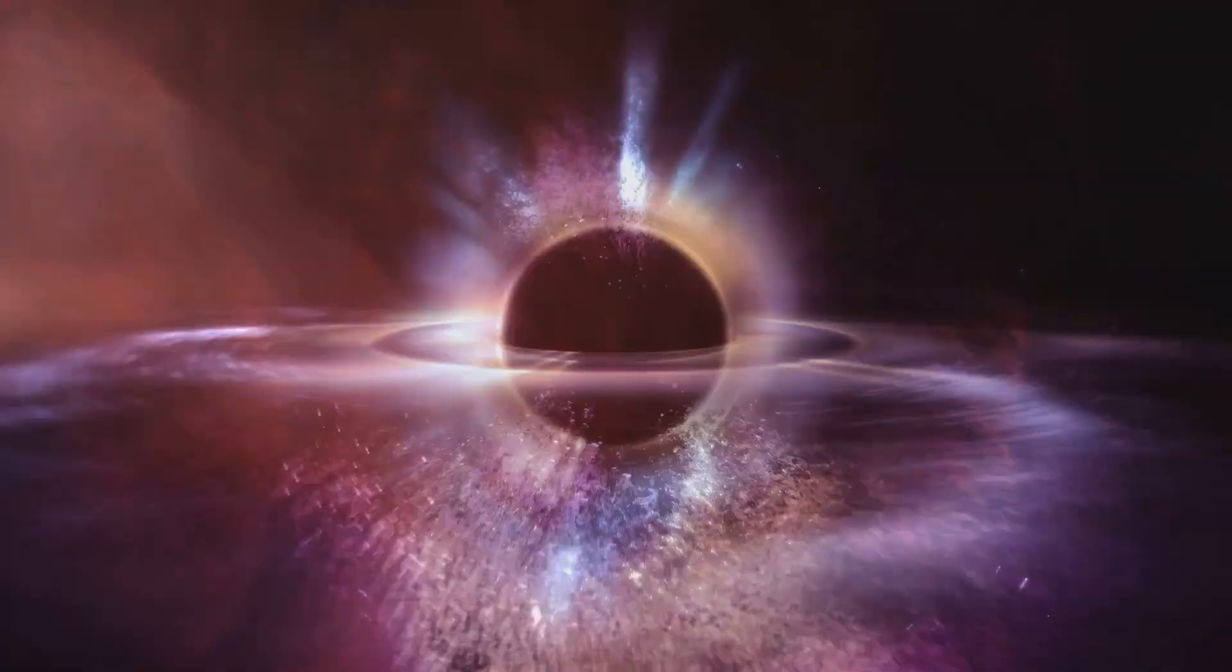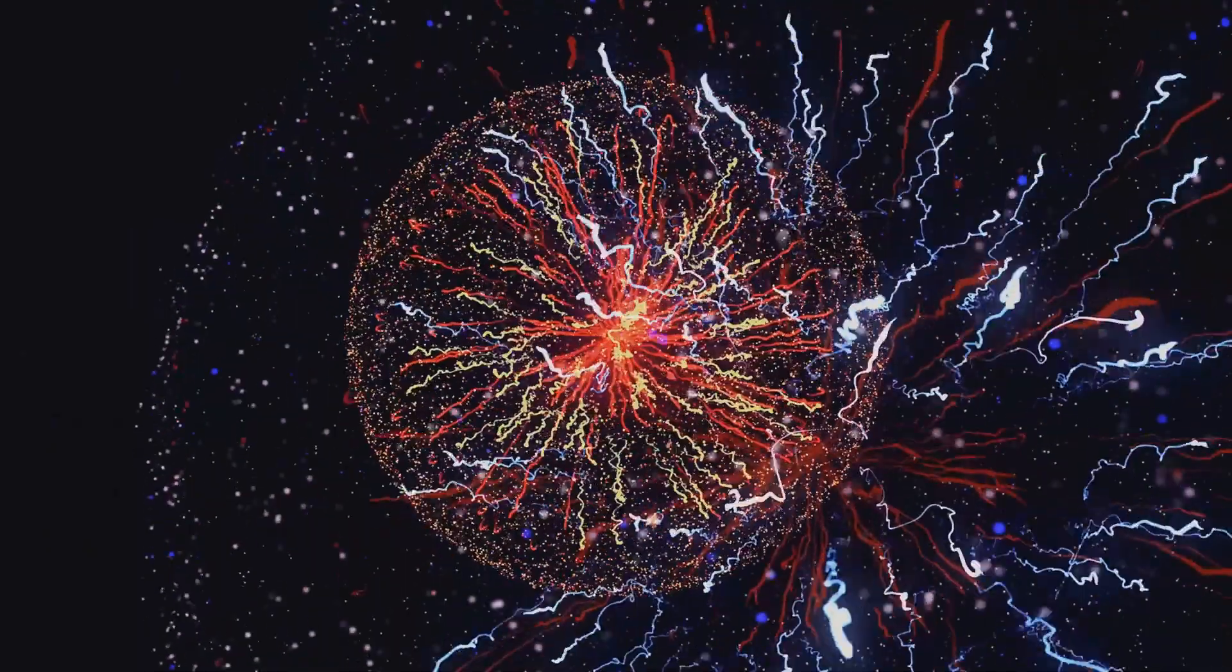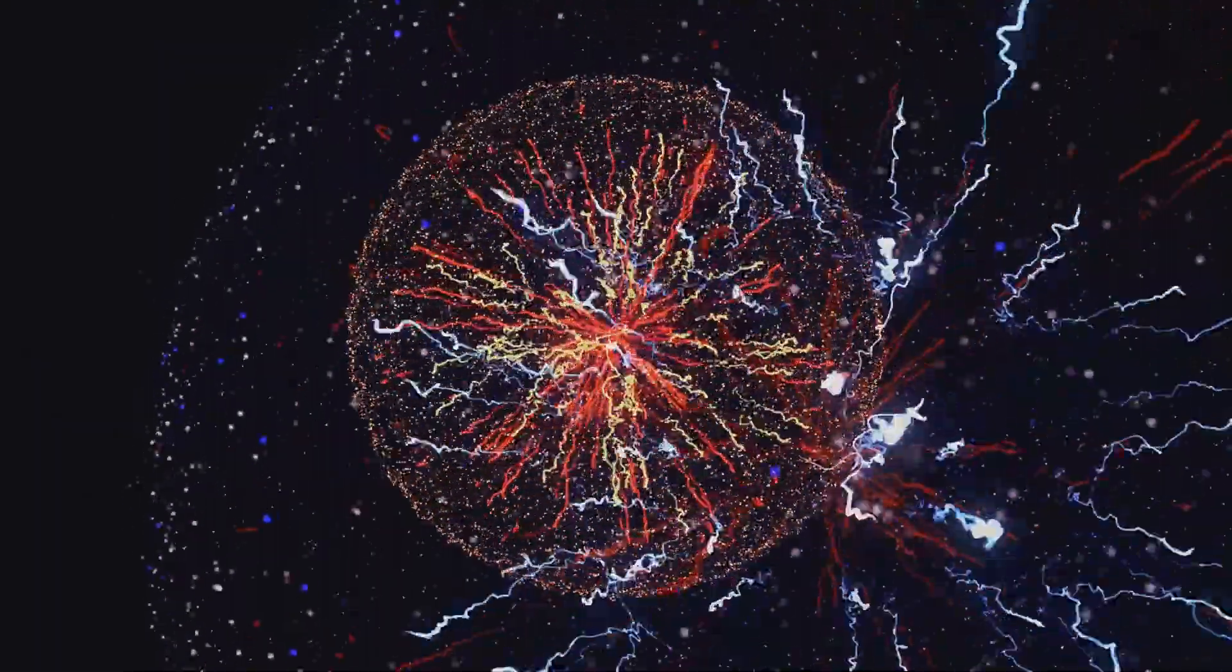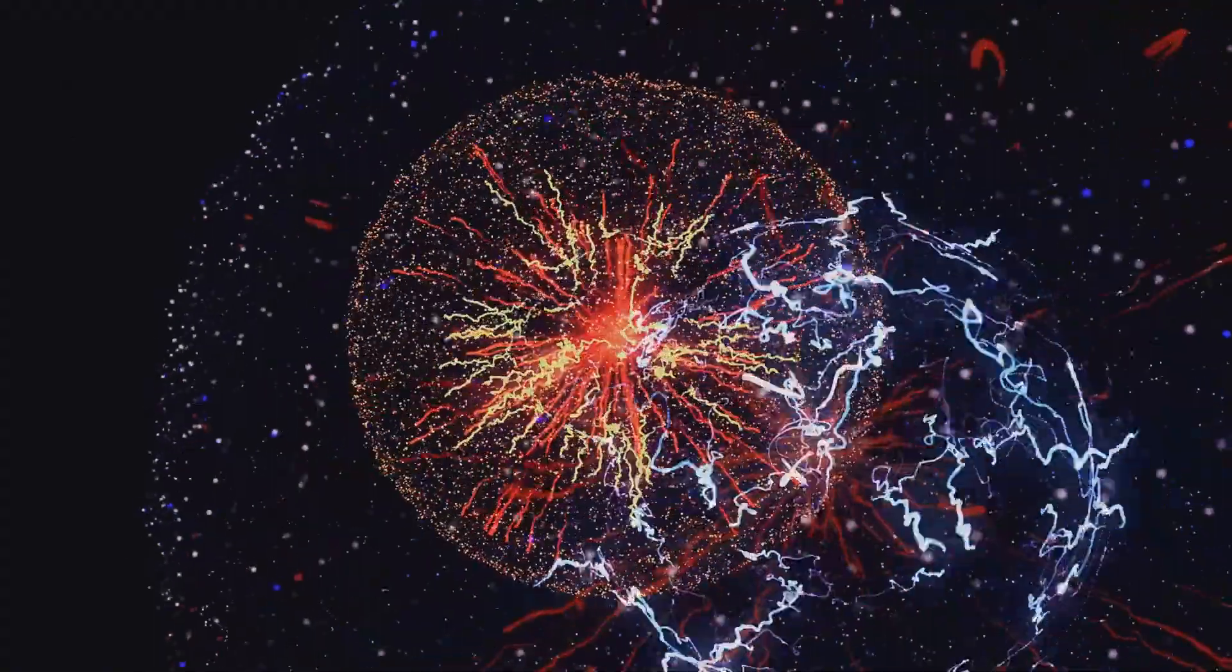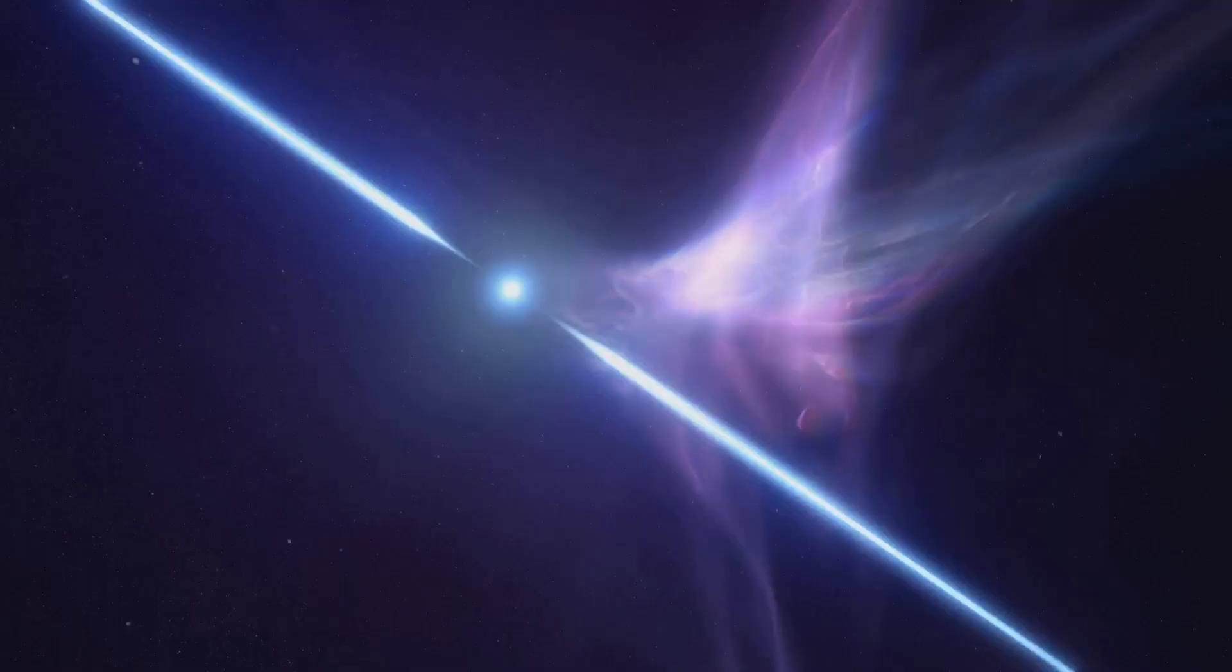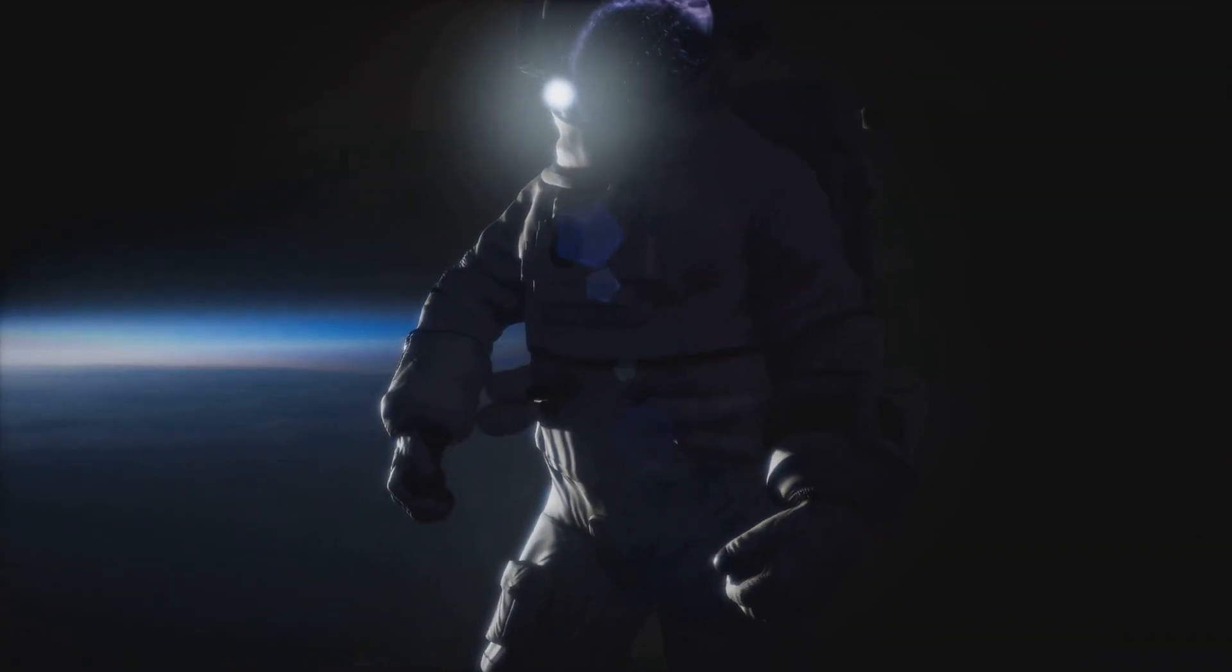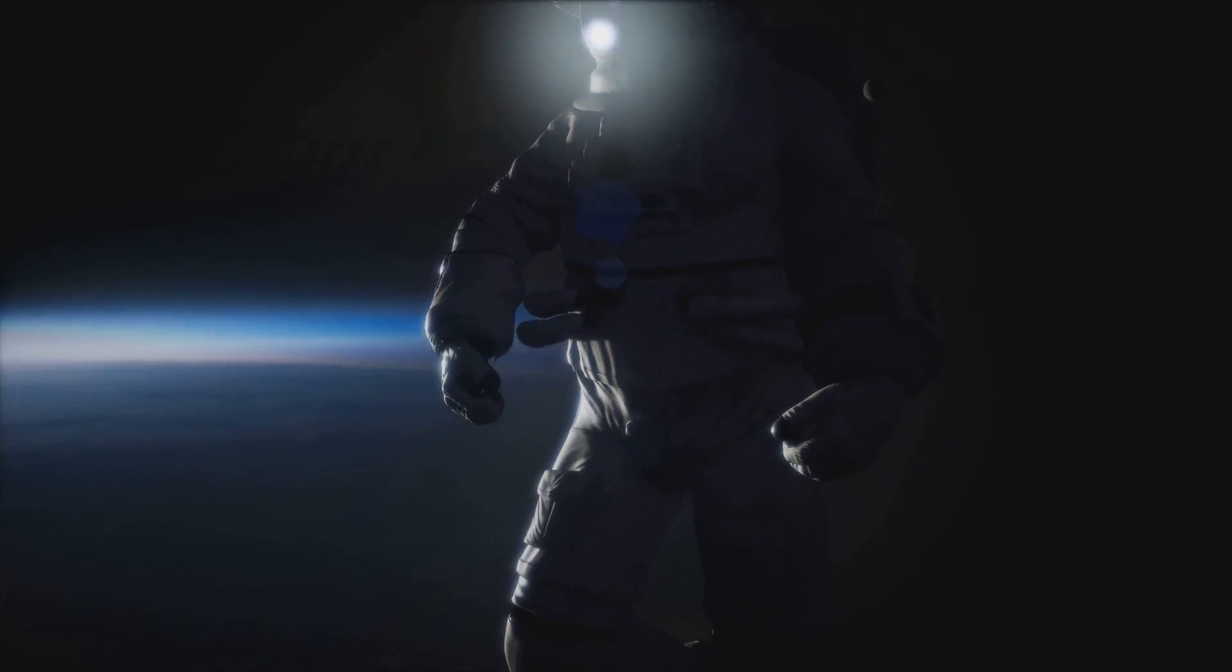But what does this mean for the universe's ultimate fate? Well, if we follow the trajectory of increasing entropy, we reach a point where all the energy in the universe is evenly distributed. There are no gradients left, no differences in temperature or density. Everything is the same, everywhere. This, dear listener, is what we call the heat-death of the universe.